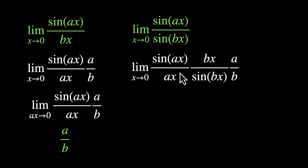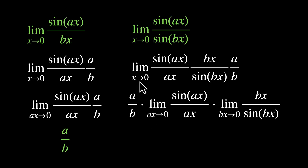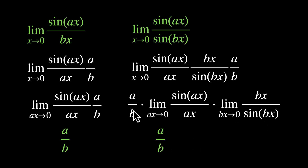Limit x approaches 0, sin(ax) / ax times bx / sin(bx). To keep things the same, we multiply by a/b — a cancels out, b cancels out, things remain the same. Now let's spread the limit and get the constant out. We have a/b times limit ax→0 sin(ax)/ax, times limit bx→0 bx/sin(bx). Whatever's inside the sign, we change the limit to that. Both become 1, and our answer is a/b. So for both problems, the answer is a/b.